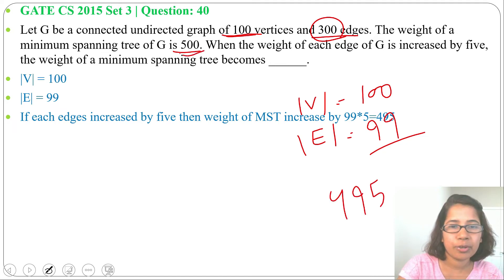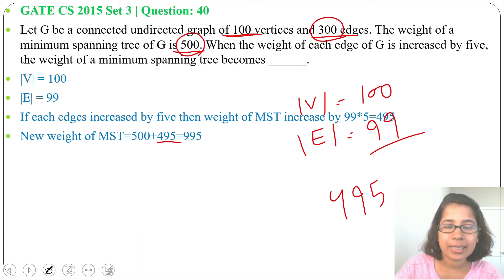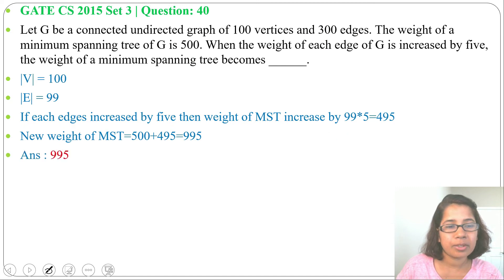Now before, minimum spanning tree cost was 500. Now after every weight increases by 5, new cost will be 500 plus 495. 99 edges increased by 5, so 500 plus 495, that's 995. So new cost of the minimum spanning tree is 995.